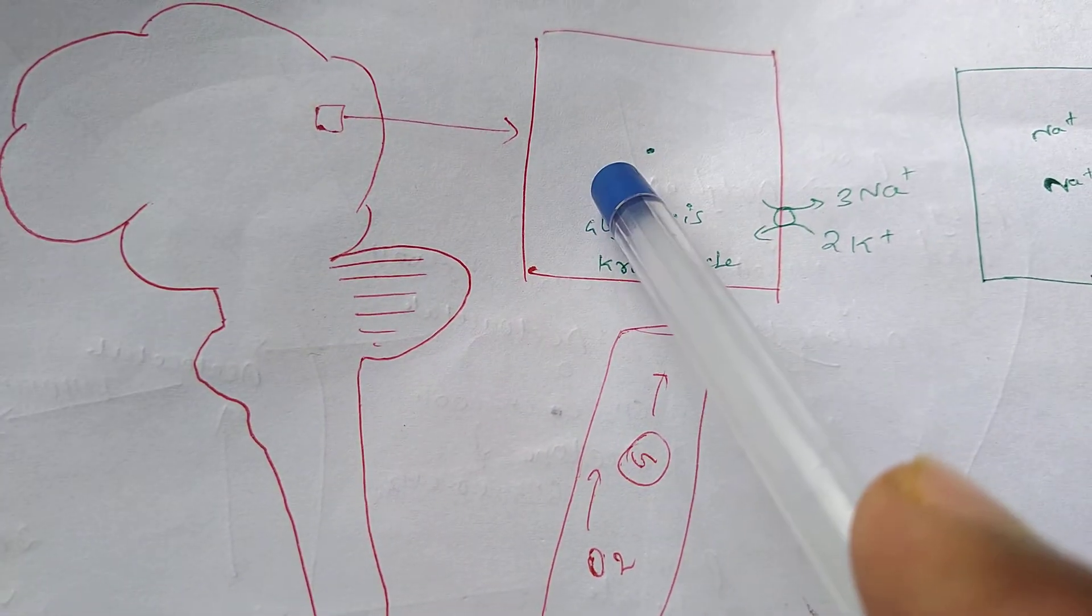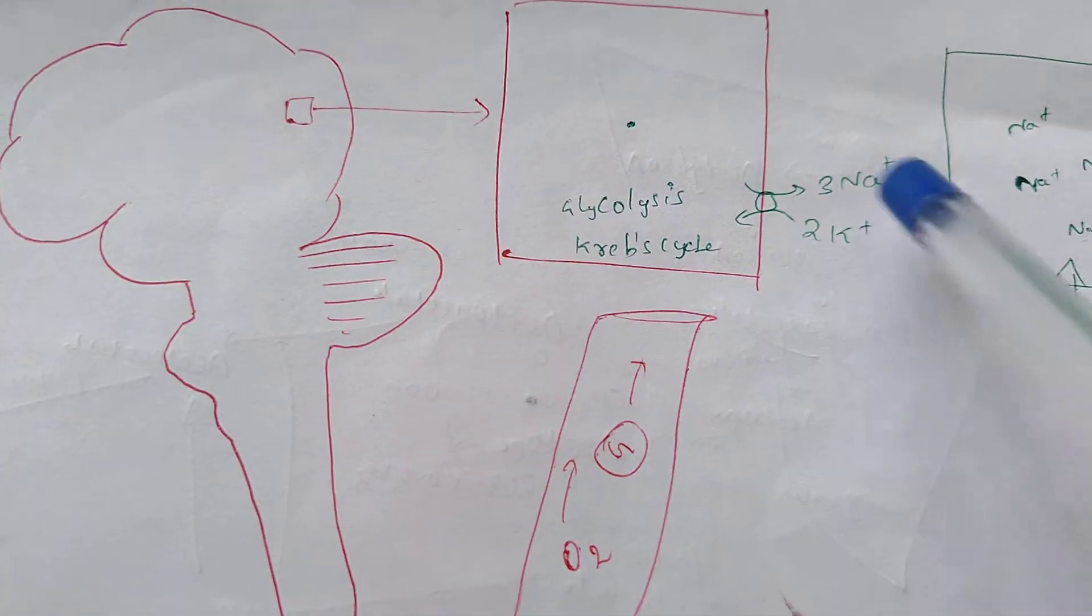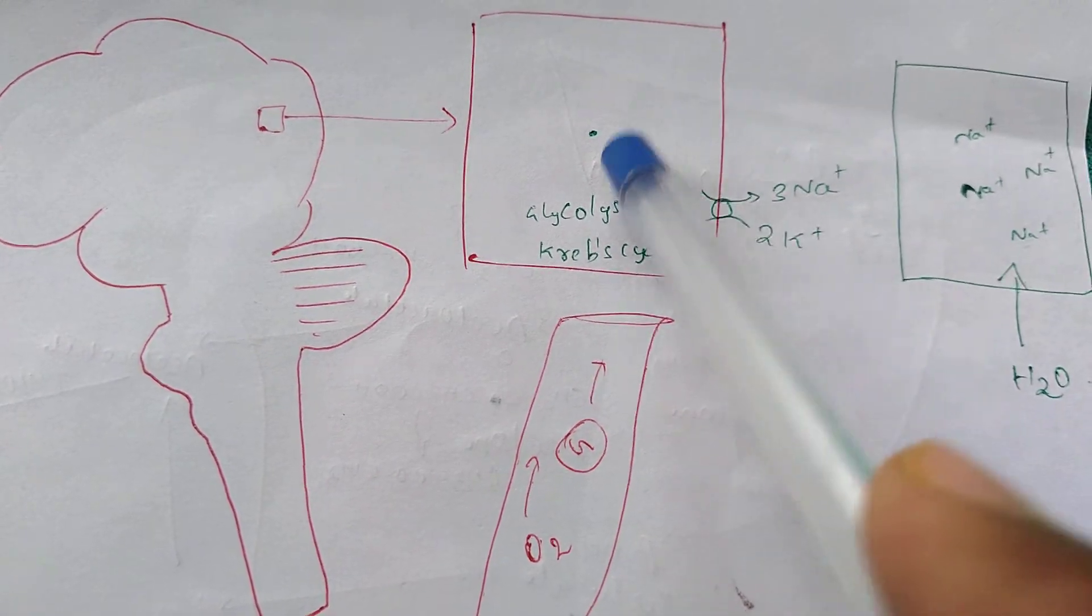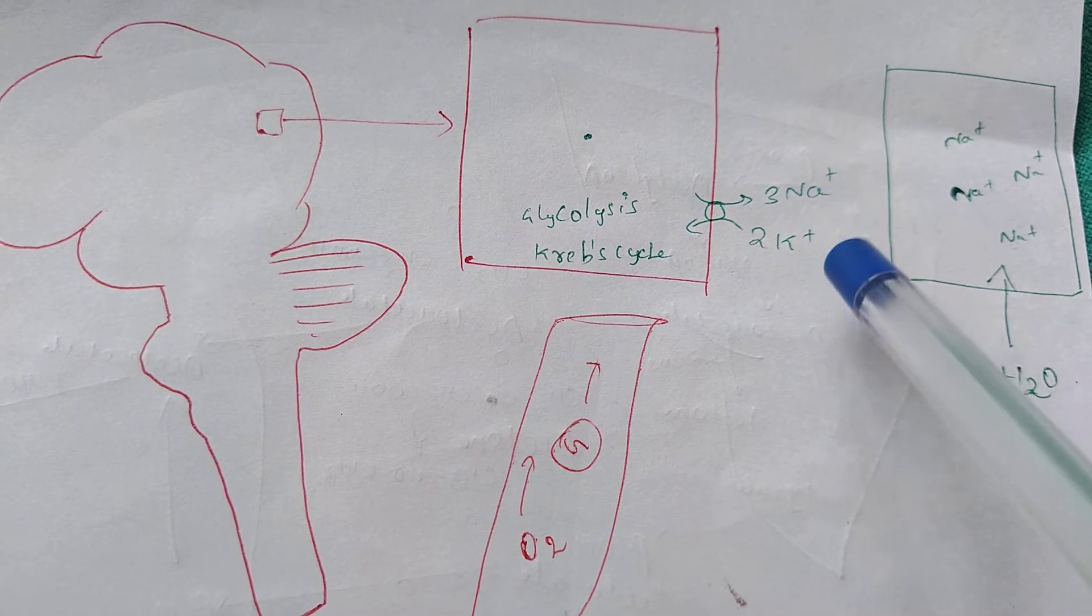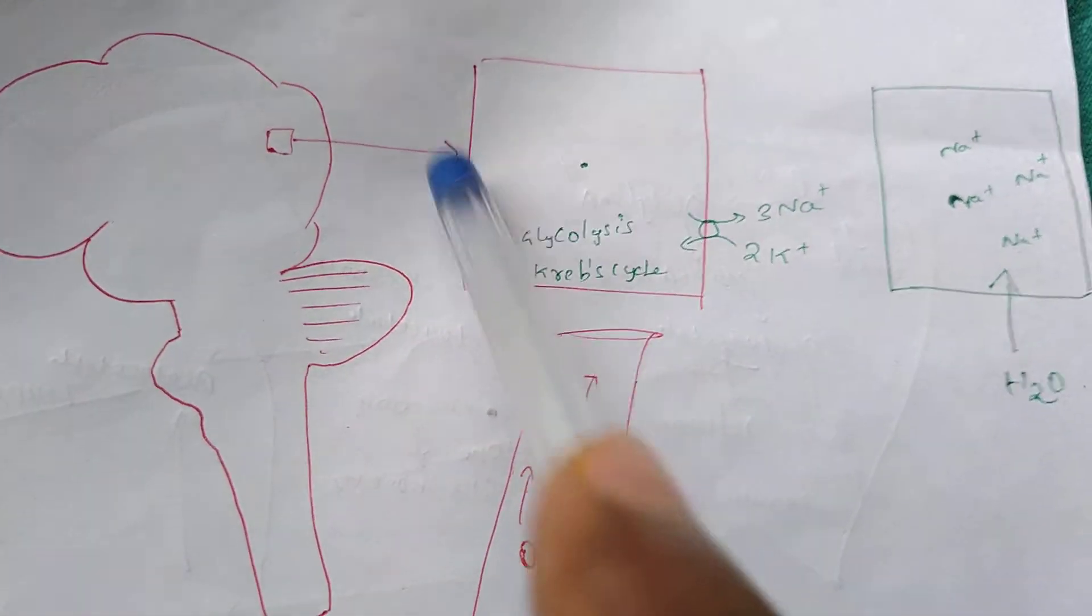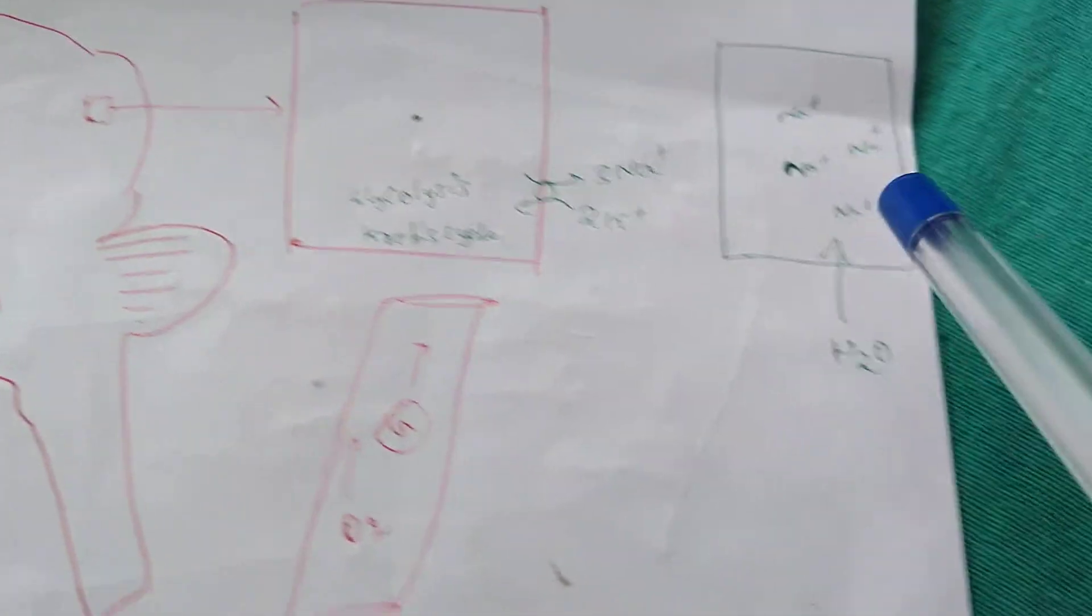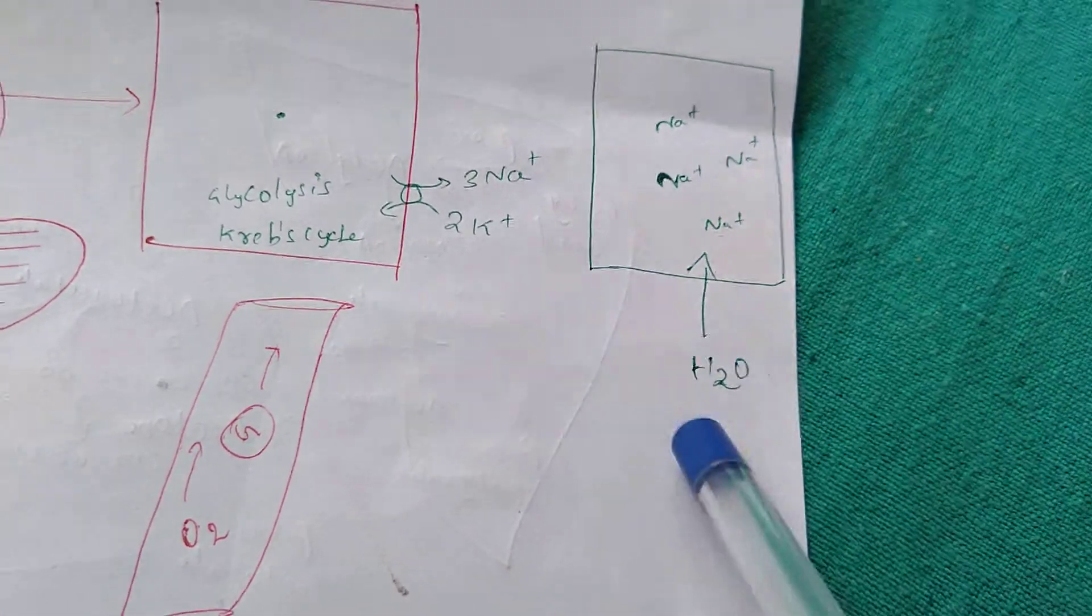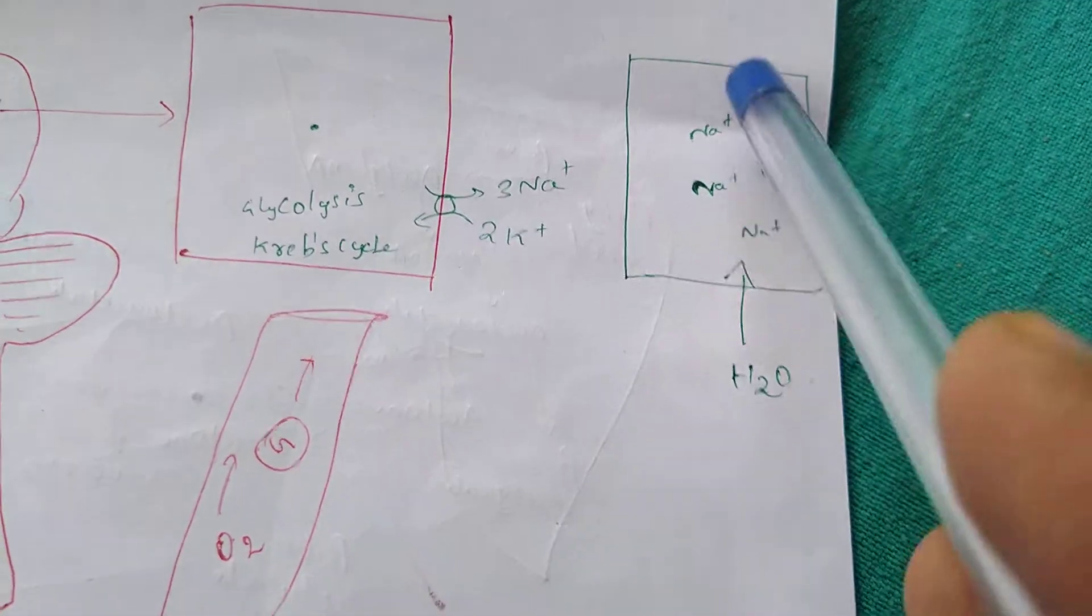Without ATP, the sodium-potassium ATPase pump won't work. This pump normally drives three sodium out of the cell and two potassium into the cell. Without this pump, the sodium won't be driven out of the cell, so sodium will accumulate inside the cell and water will follow sodium. Eventually, cell edema happens.